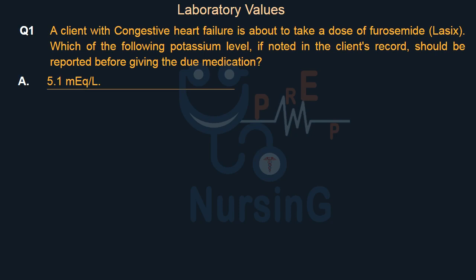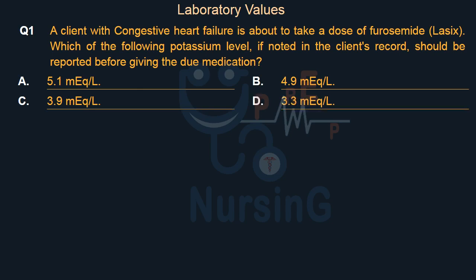Option A: 5.1 mEq/L. Option B: 4.9 mEq/L. Option C: 3.9 mEq/L. Option D: 3.3 mEq/L.